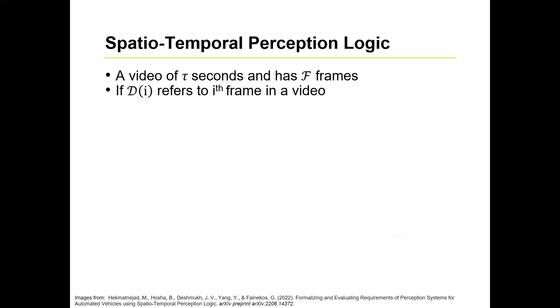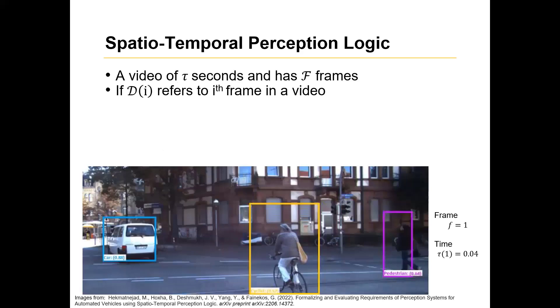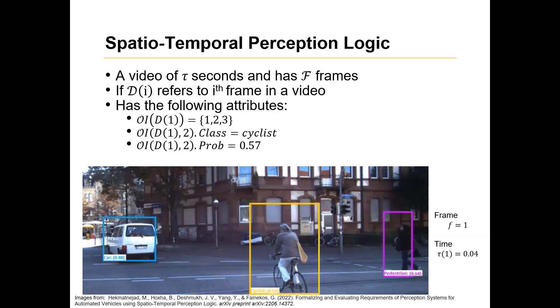So if there's a video of tau seconds and has f frames, and if d_i refers to the ith frame in a video, I just want to give you an example. So if you have this particular frame in a video, this is the first frame and it corresponds to the time 0.04, we assume that our perception model gives us the following things. The classes in a particular frame. So here we have three different classes, a car, a cyclist, and a pedestrian. So we have three different classes assigned to it. Then we have information of what every class refers to. So in this particular case, the second class is basically the cyclist and we call it the cyclist. And we have a perception model that does that for us. Then its probability of being a cyclist and the time that particular frame corresponds to. So these are the assumptions that STPL assumes that we get from the perception model.